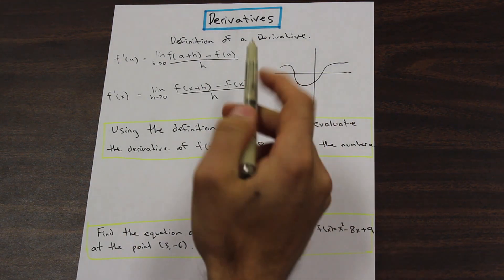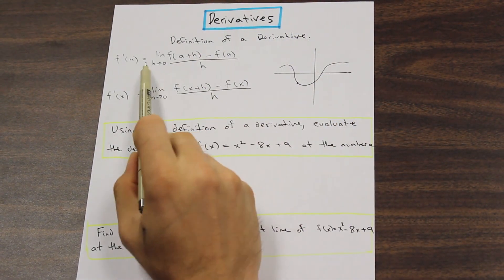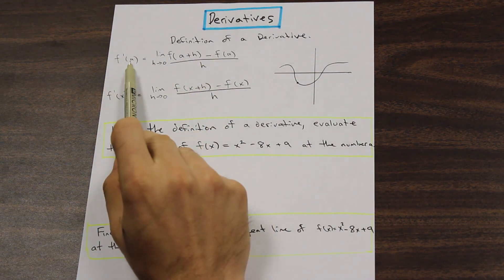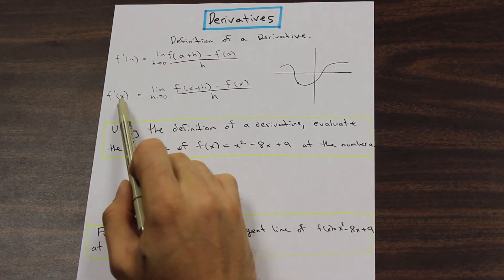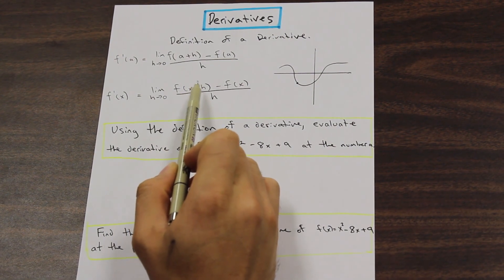And the definition of a derivative is a limit, actually, and if we look up here, we have it in terms of a, which in terms of a constant number, or we can write it in terms of x, in terms of a variable.